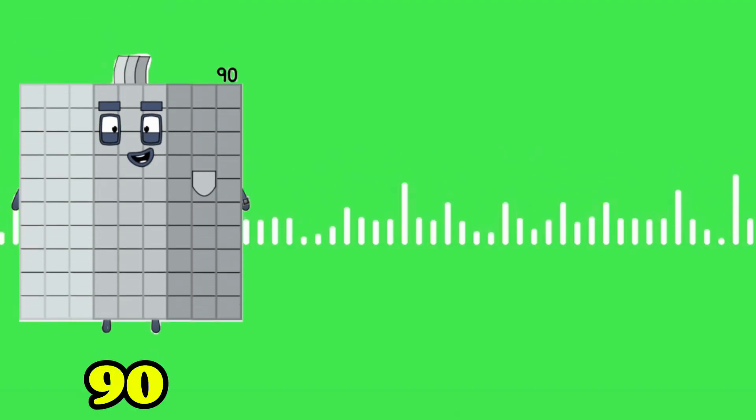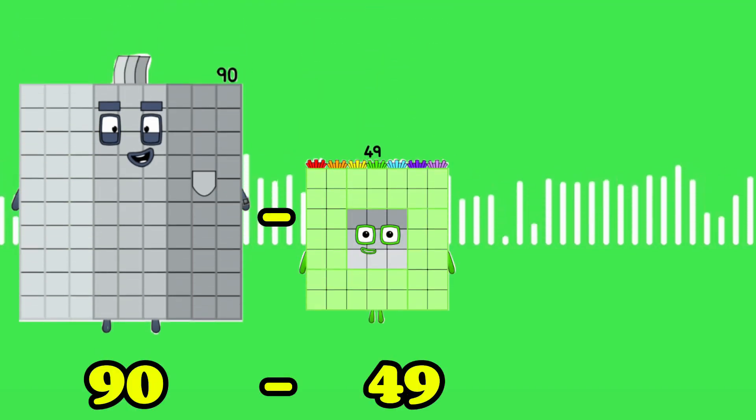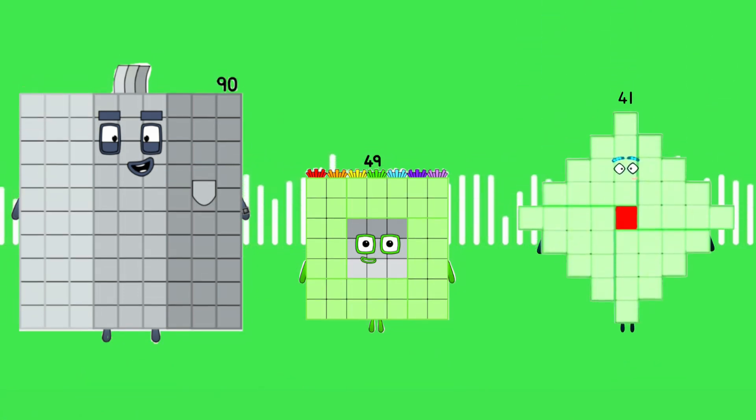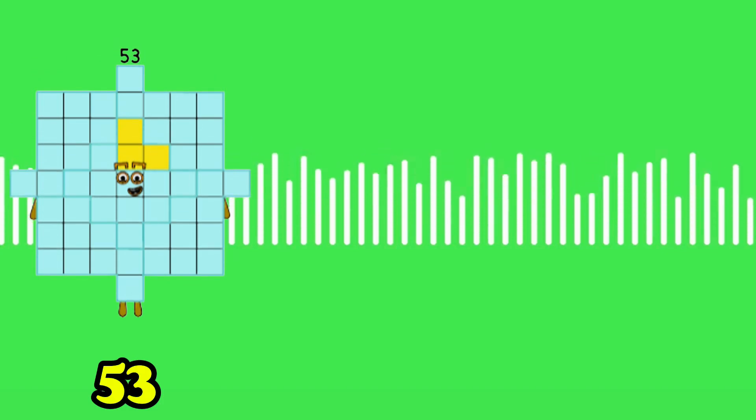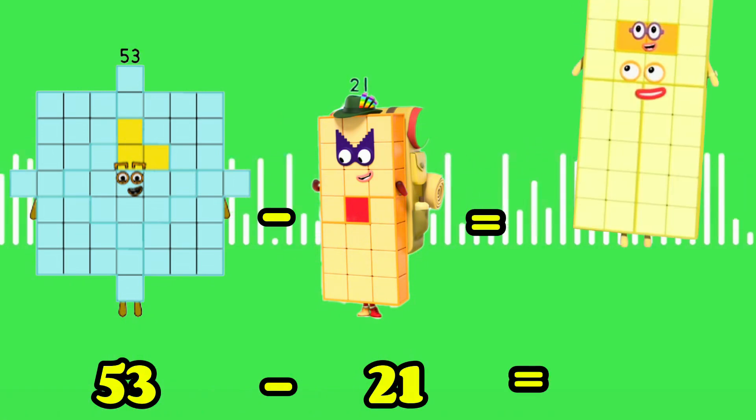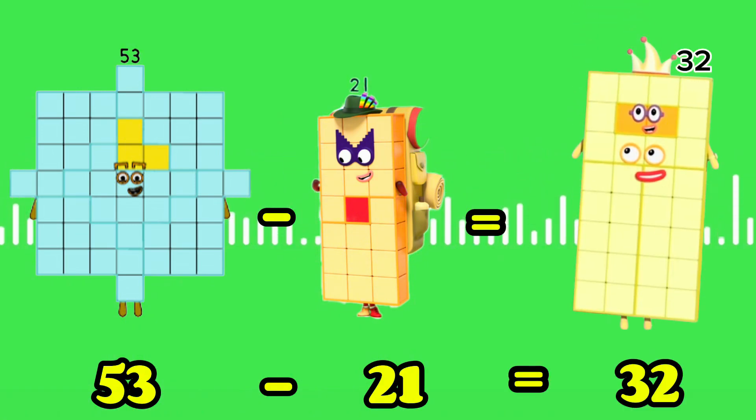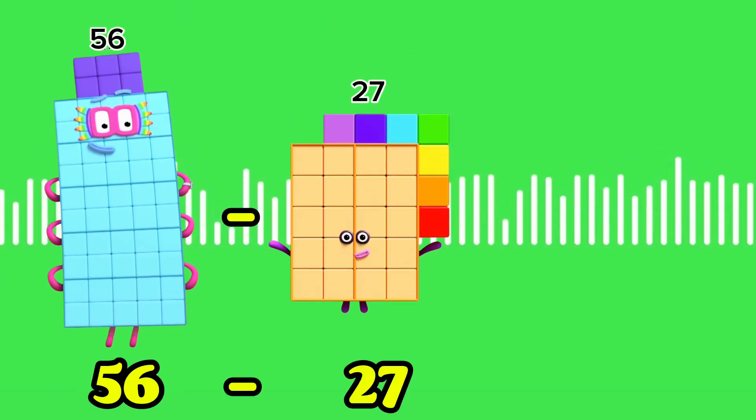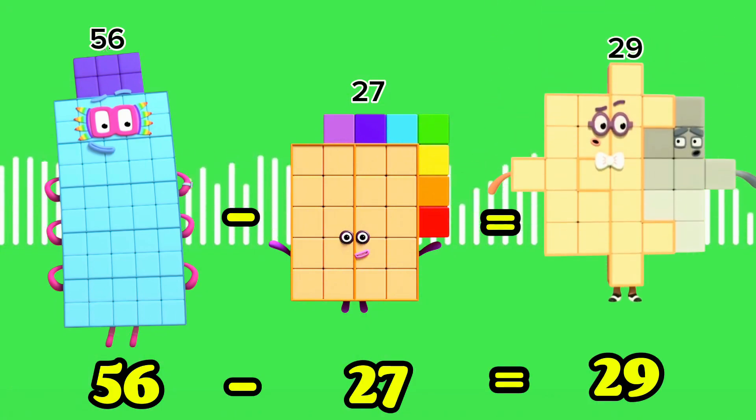97 minus 49 equals 41. 53 minus 21 equals 32. 56 minus 27 equals 29.